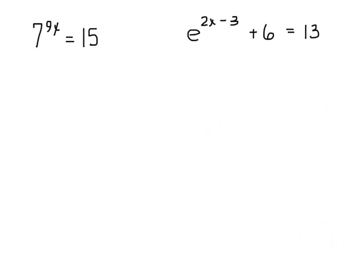Now what happens if I can't make them the same base? I cannot make 7 and 15 the same base, so this is where I have to go to logs. If you cannot go to the same base, you will go to logs. I'm going to use the alpha window button on the calculator.